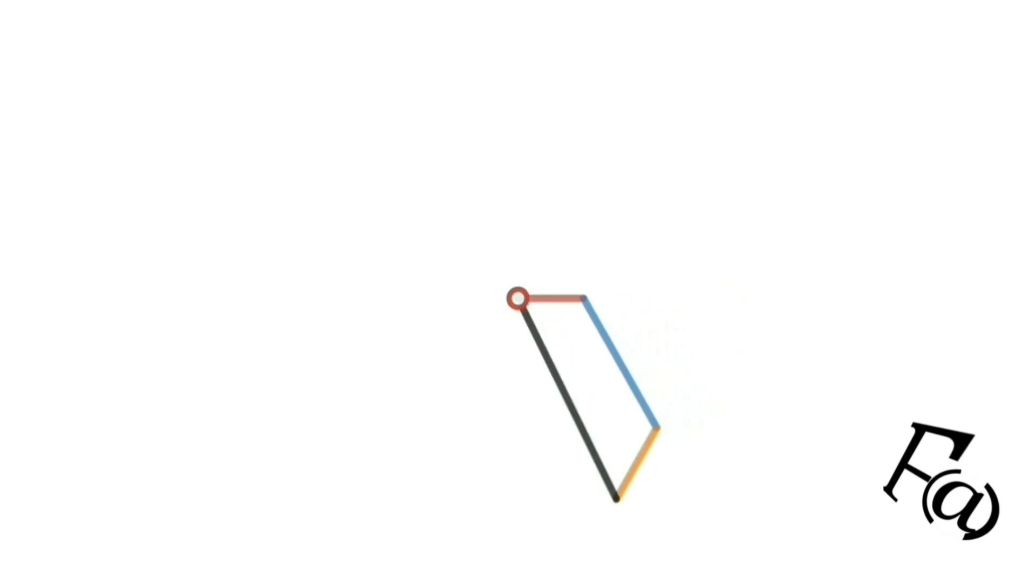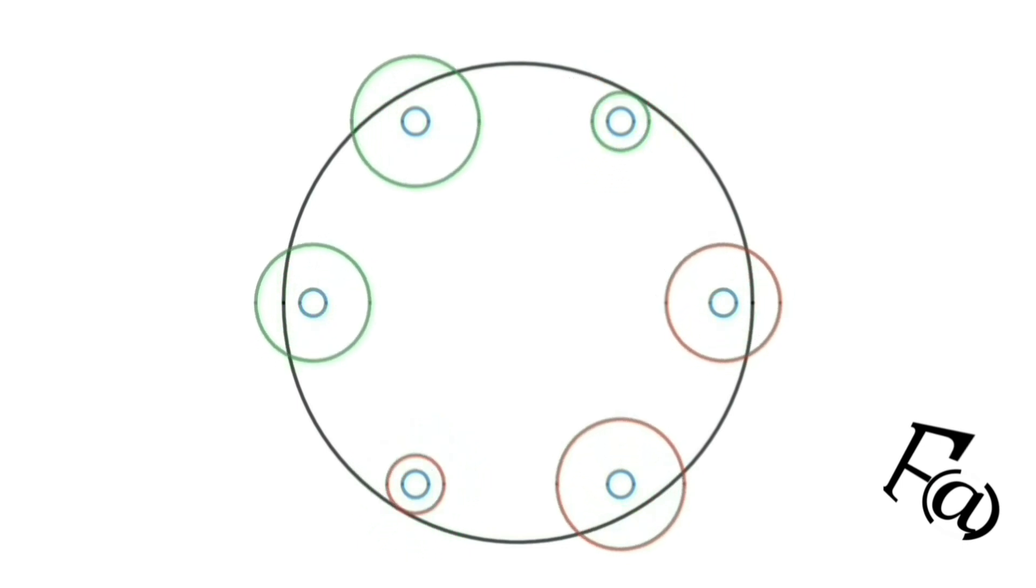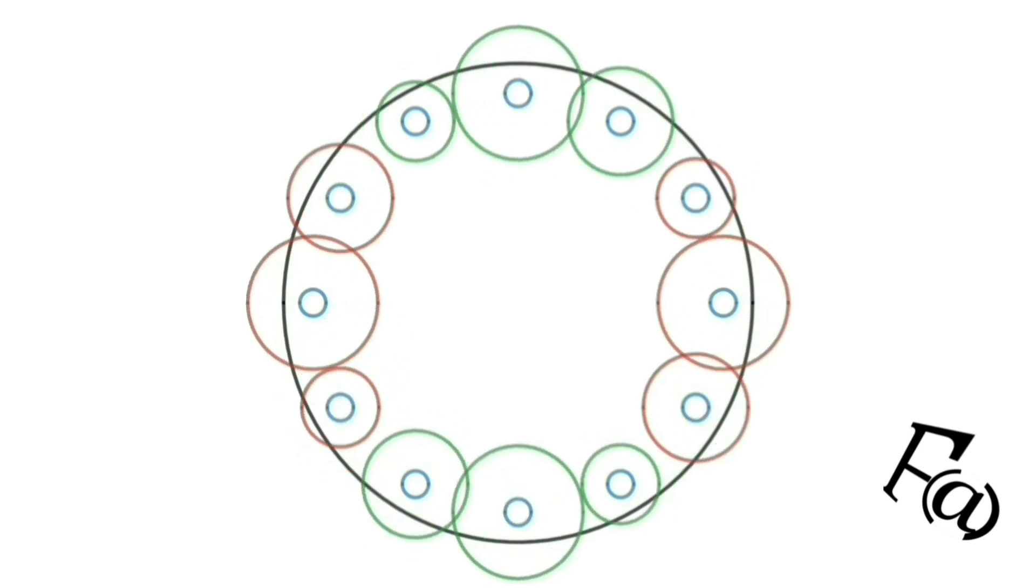In case you are curious about how this plays out inside the stator of a three-phase induction motor, here is the two-pole stator. The blue circles are the cross-section of the conductors, while the green and red circles represent the clockwise and counterclockwise magnetic field around them respectively. The radius of the green and red circles are the magnitudes of their fields. Similarly, this is a four-pole stator.